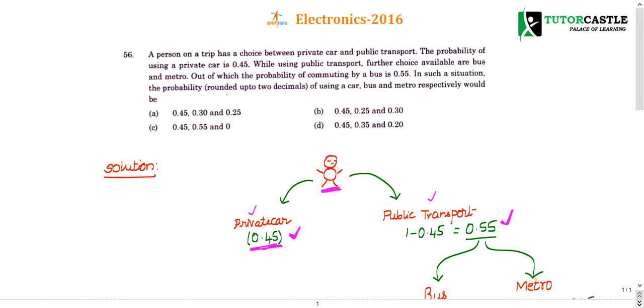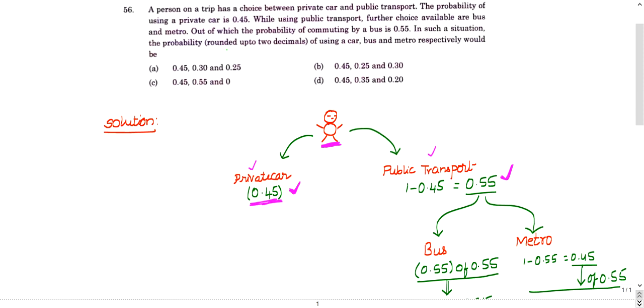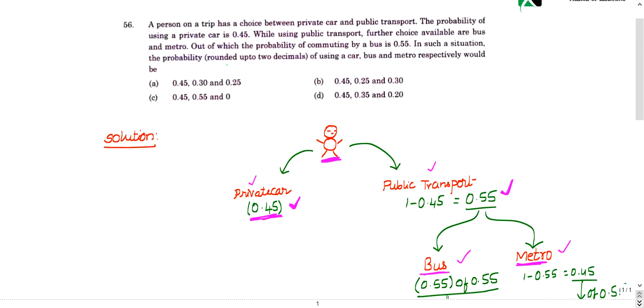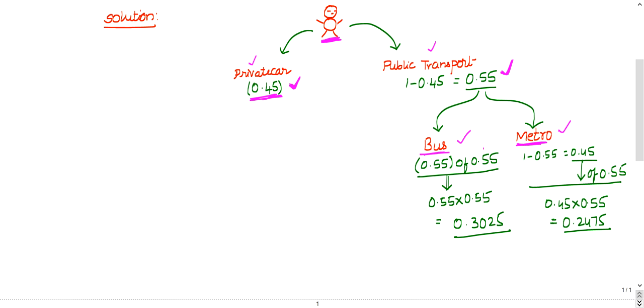While using public transport, further he can make a choice - available are bus and metro. Out of which the probability of commuting by bus is 0.55. So what is the probability of metro? It is nothing but 1 minus 0.55, which is 0.45.